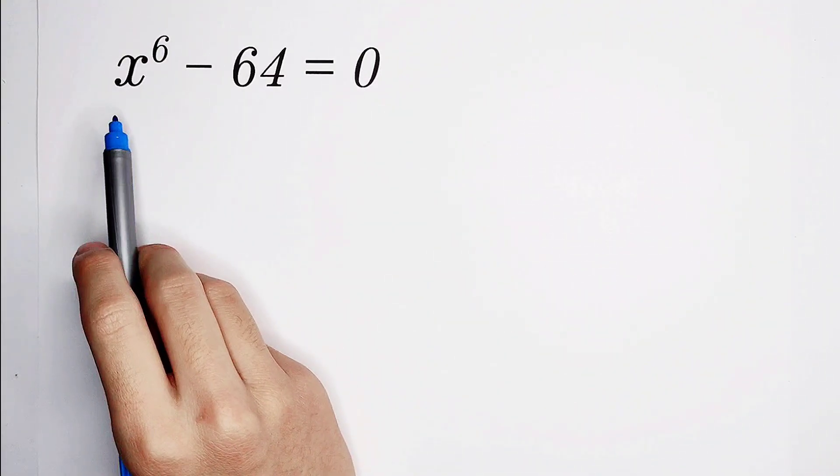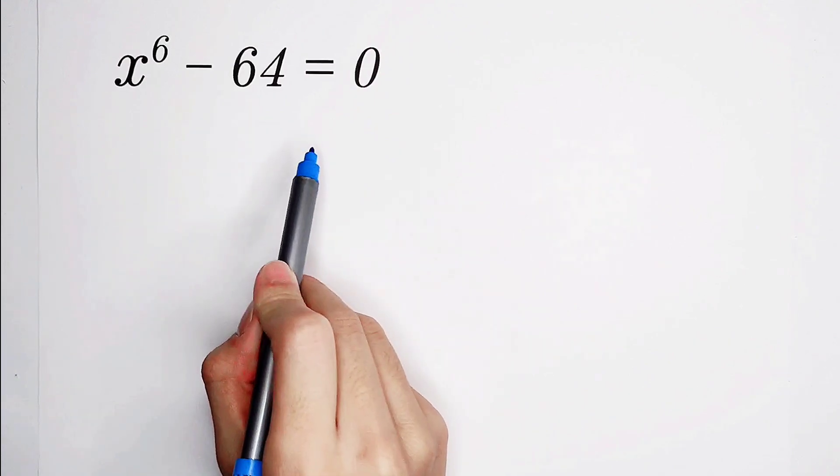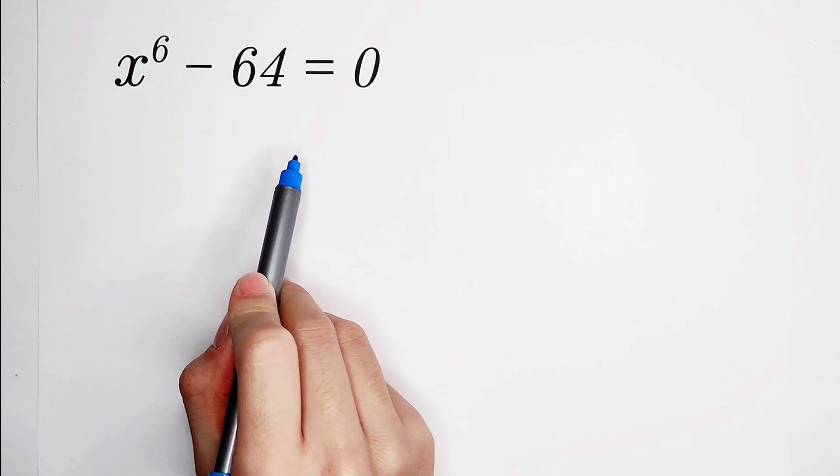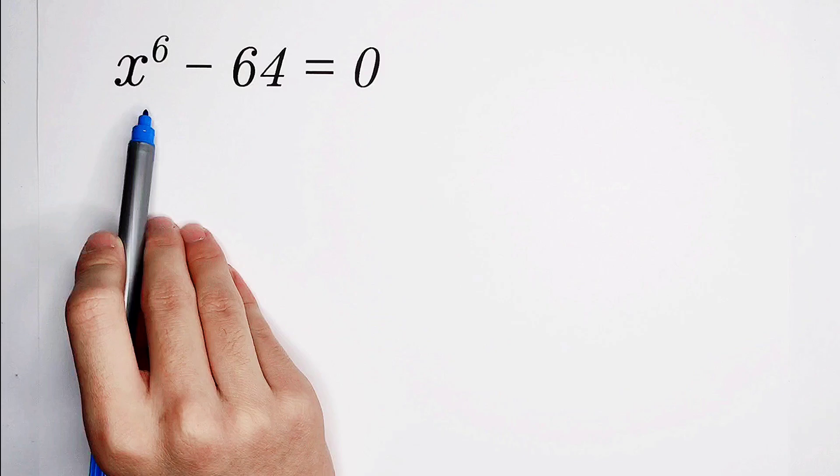So this equation, x to the power of 6 minus 64 equals 0. The sixth power, we hate it, very large.